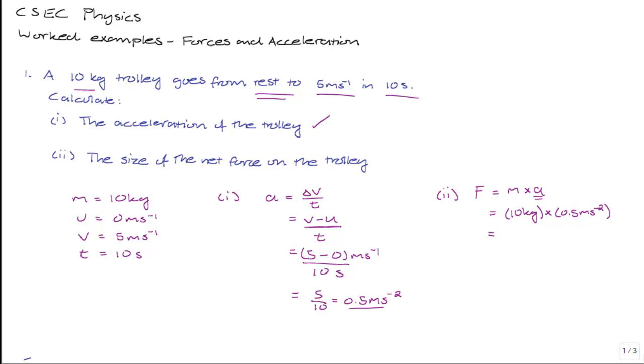you get a value for the force acting on the trolley of 5 kilogram meters per second squared. But remember that the kilogram meters per second squared is a unit that we call 1 Newton. So this answer is also equal to 5 Newtons.